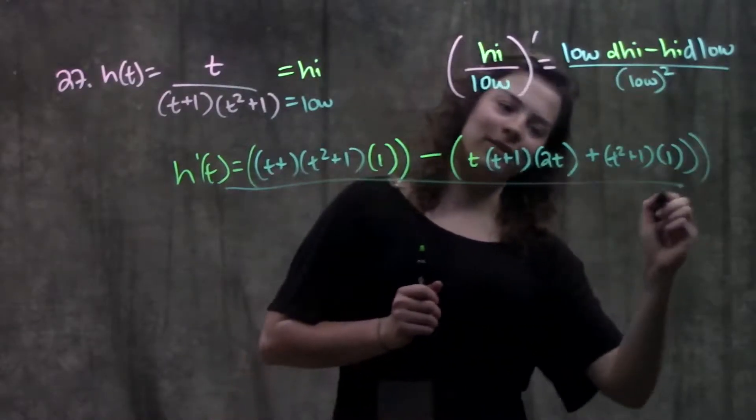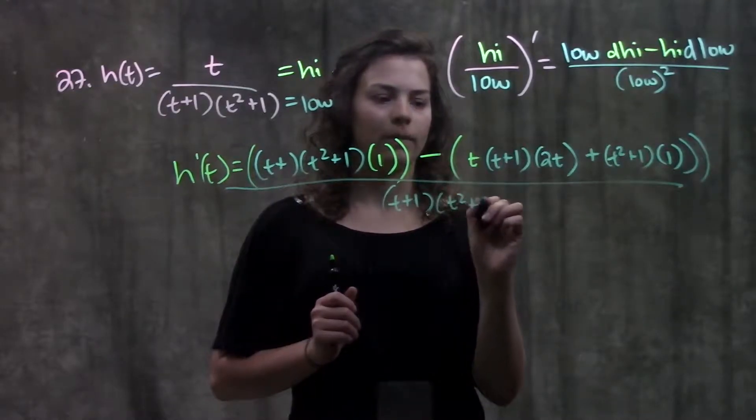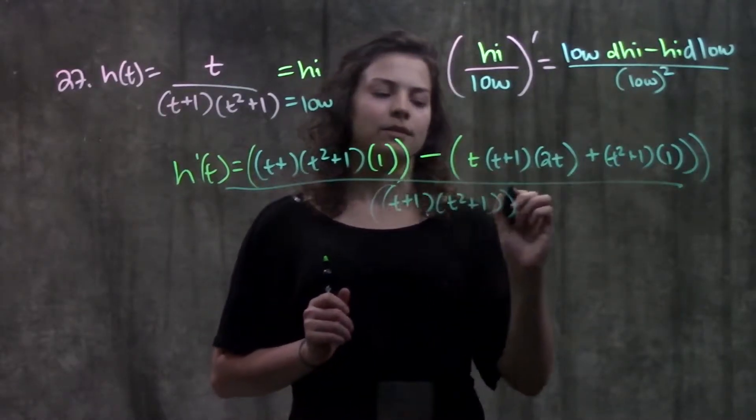Alright, and all of this is over my low squared. So over t plus one times t squared plus one, all of this squared.